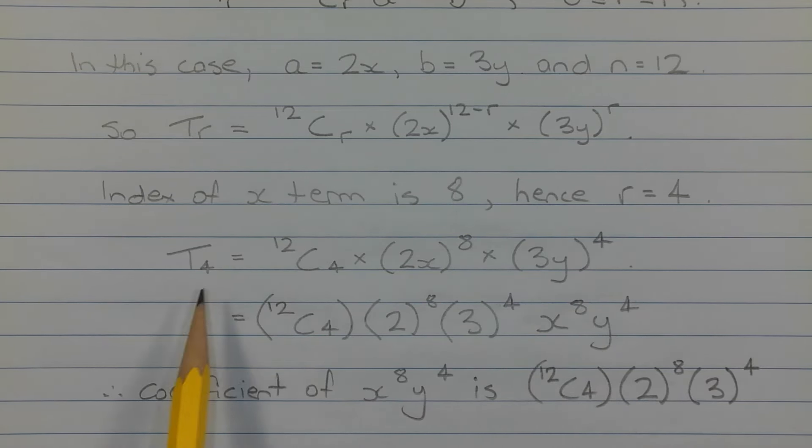It's arranged in this way because the question is asking for the coefficient of x to the power of 8, y to the power of 4. So the coefficient is this value here. It hasn't been evaluated, it's just left in this form.